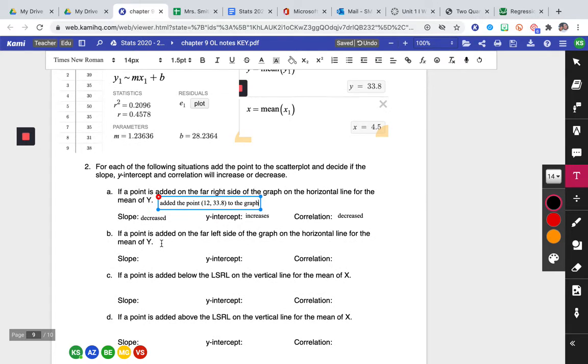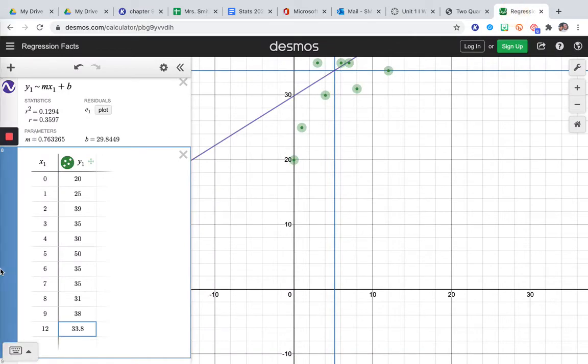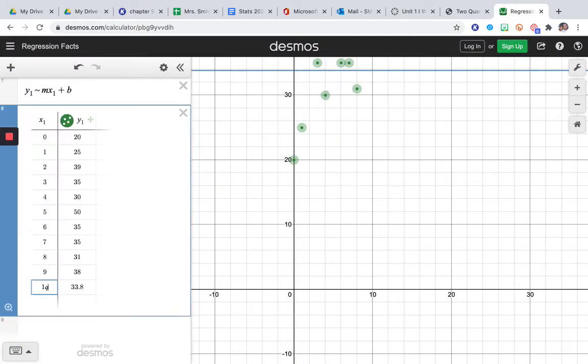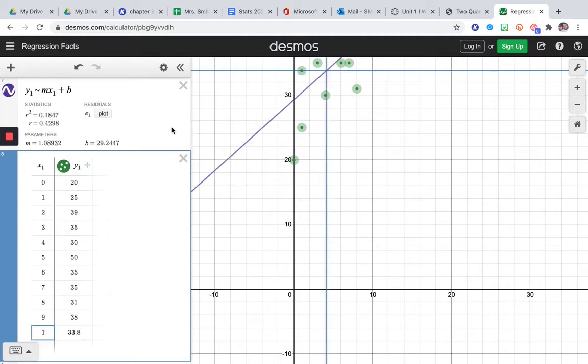So question B says if a point on the far left side of the graph on the horizontal line for the mean of y, so the far left side would be a small x value with the same y value for the mean of y. So let's add the point. We'll do 1, 33.8 and see what happens. So I'm going back to the Desmos and I'm going to change this 12 to a 1 and then see what happens.